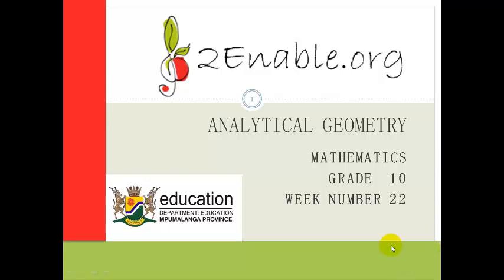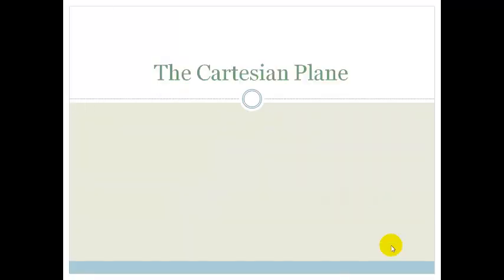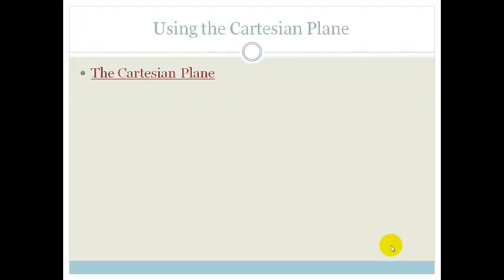Good day, Great Tens. Welcome to week number 22. We're going to be looking at analytical geometry today, and we're going to start with a Cartesian plane. So let's look at a little video. Just for the record, the Cartesian plane can also be called the coordinate plane. So let's have a look at it.